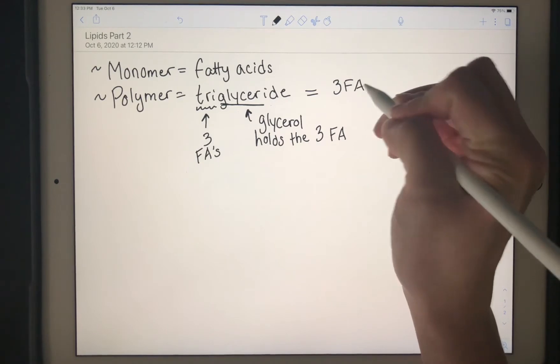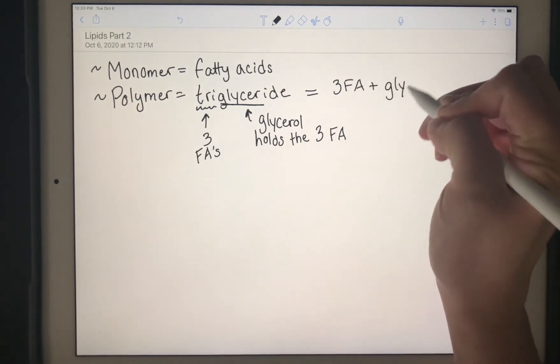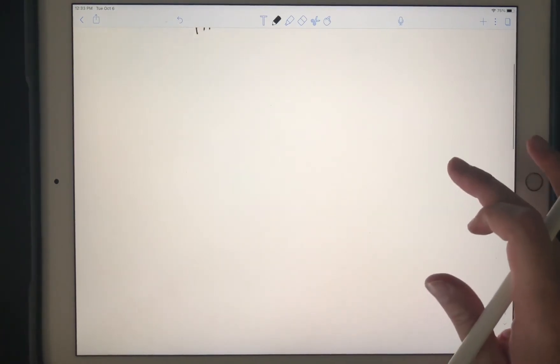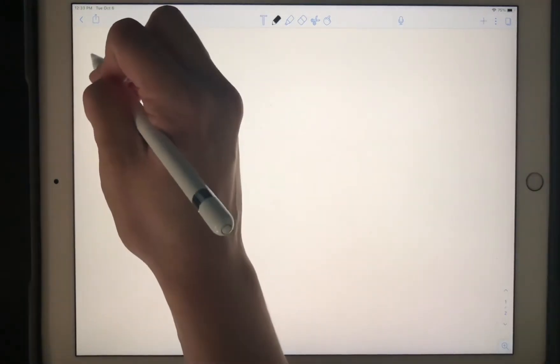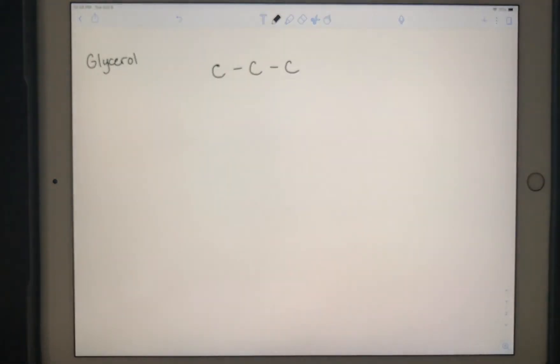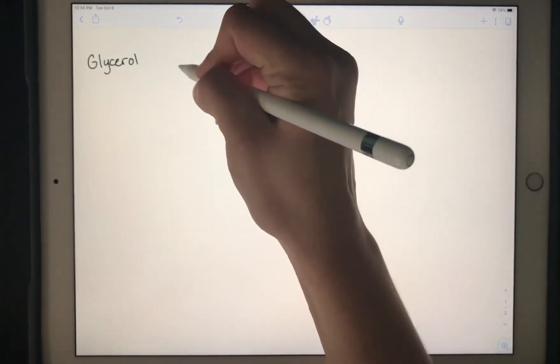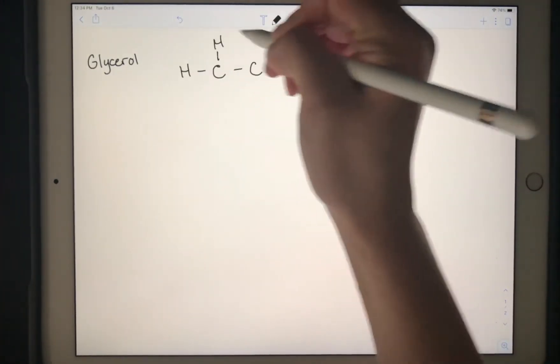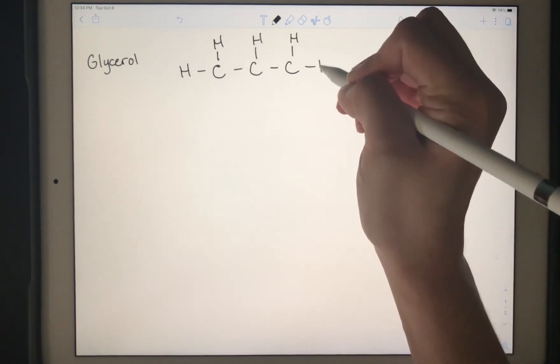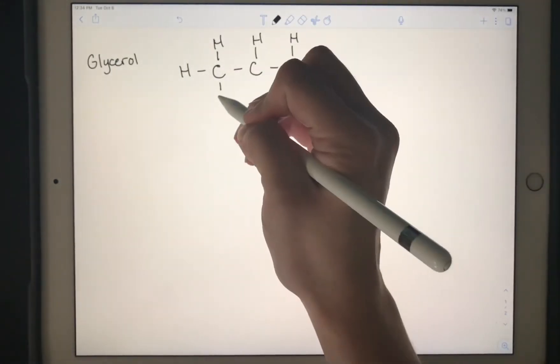So a triglyceride is just three fatty acids plus a glycerol. We're going to go into how we can sketch this. We'll start by sketching our glycerol at the top. It has three carbons in a chain, and on the outside of these carbons are connected hydrogens, and then on the other side there's OH groups.